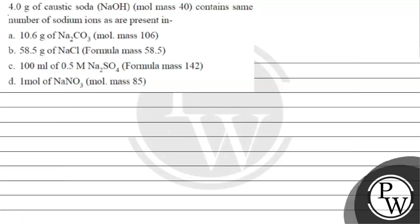Let's read this question. The question says: 4 grams of caustic soda with molecular mass 40 contains the same number of sodium ions as are present in what? Options are given to us.